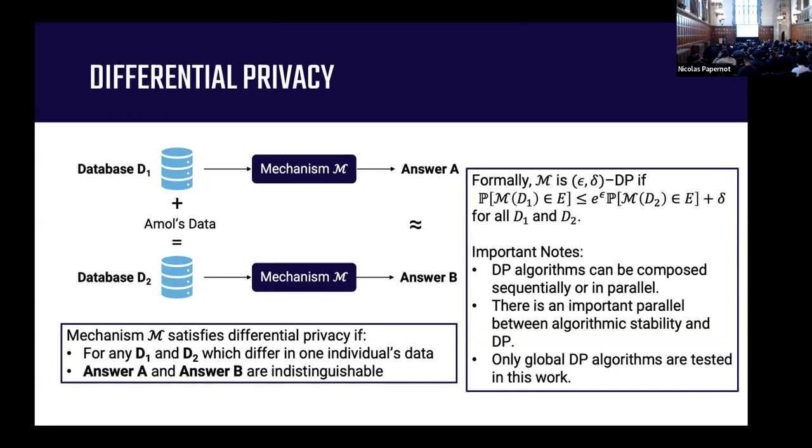Finally, we only tested global differentially private algorithms in this work. There's another setting called local differential privacy, where each individual retains their own data, and they could noise their data as they're sending it back to some server. But that produces typically a very low signal-to-noise ratio, so it's hard to get anything useful out of that. For that reason, we tested global differentially private algorithms.